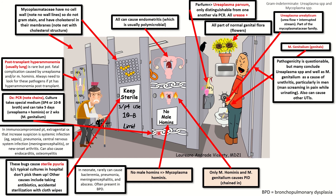Diagnosis is via PCR — you'll notice the PCR chains representing that. You can also culture it, but you wouldn't do that because it takes five days or two weeks, respectively. But if you were to do it, you can culture with SP4 or 10B broth — represented by 'status post use keep sterile' for SP4, and a 10-person limit for the stall for 10B.